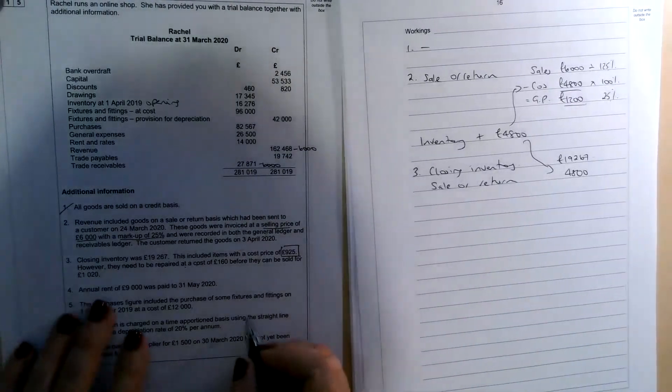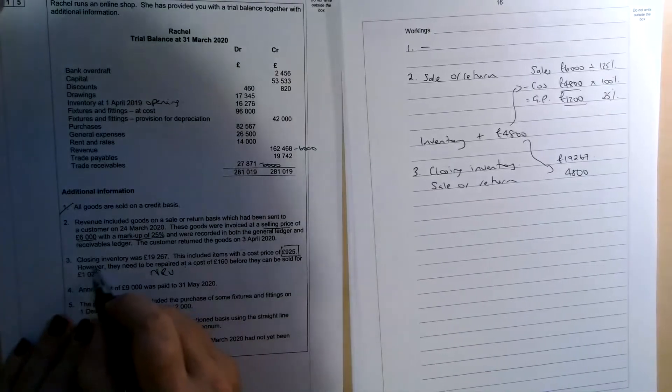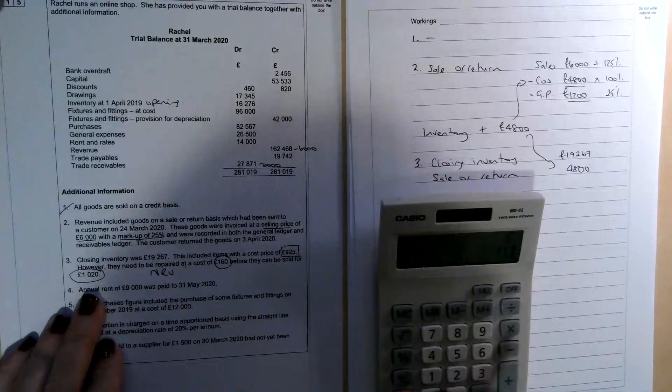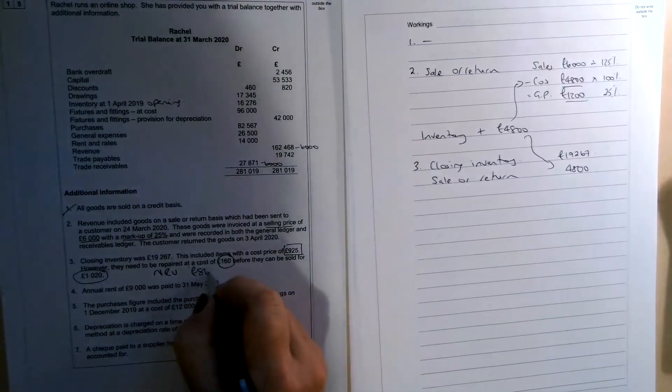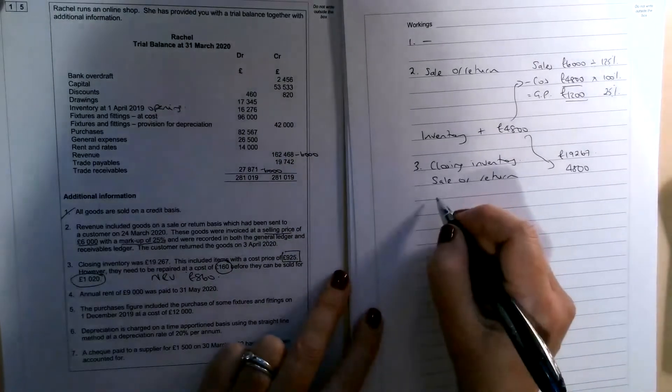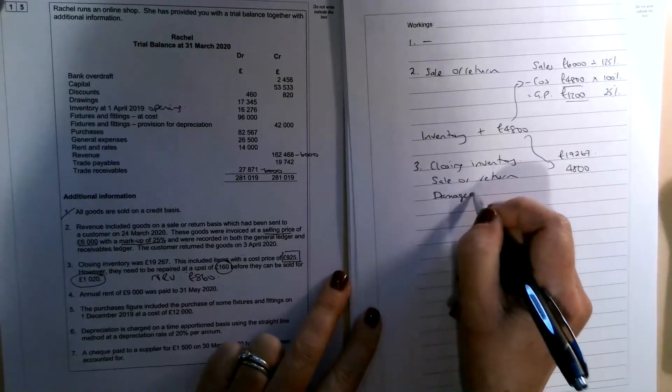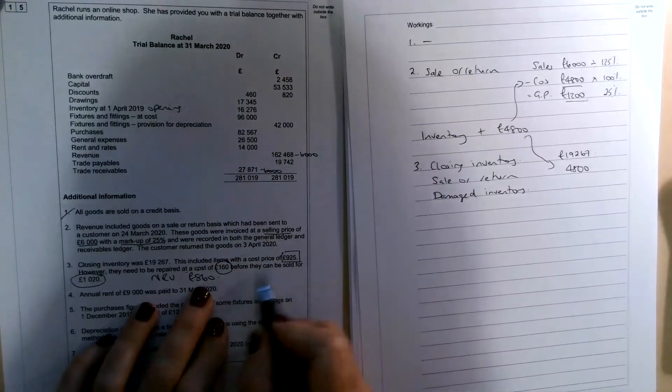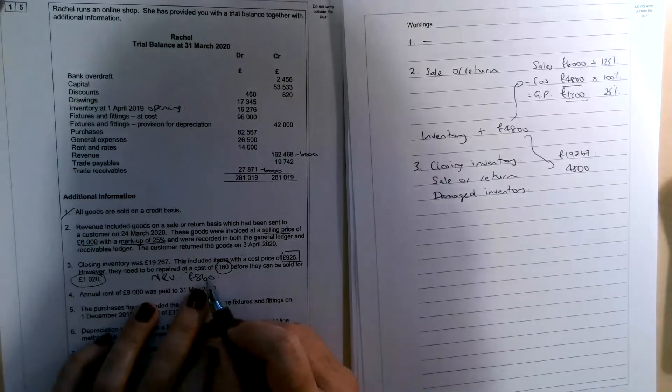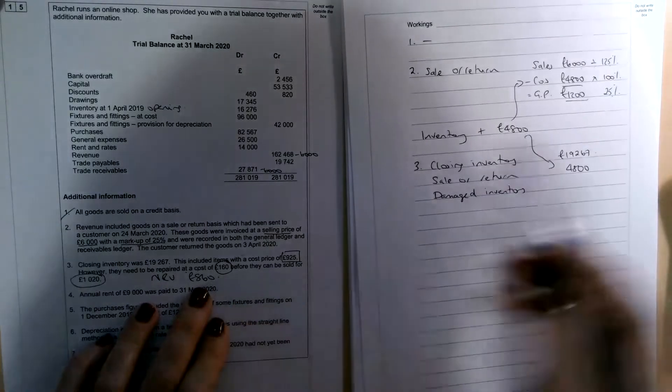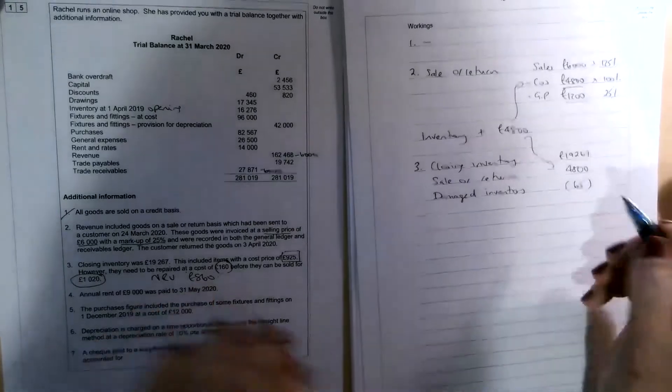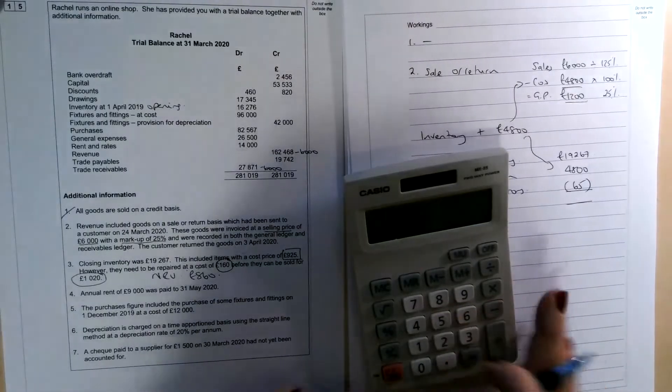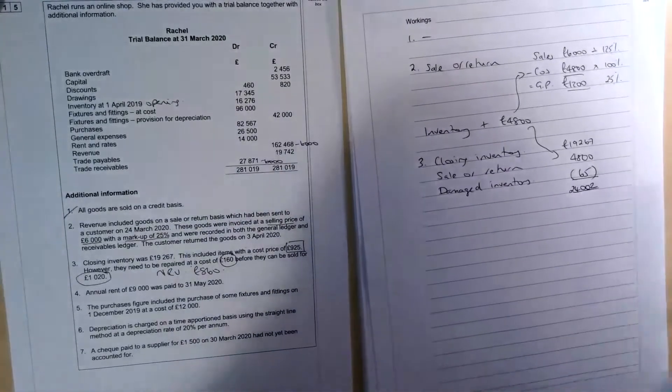So the net realisable value in this case is the £1020 that we could sell the goods for minus the £160 that we're going to have to pay to get them amended. So £1020 minus £160 means that the net realisable value is £860. So the way we deal with it is to make an adjustment. We're going to reduce the value of the inventory. We're going to take away the £925 and add the £860. Or the easier way of doing it is just to take off the difference. So cost was £925. We're now only going to be able to realise £860. So there's a further loss on that inventory of £65. So we need to record that. So that's going to reduce the value of inventory. So closing inventory now is going to be £19267 plus £4800 minus £65, which is £24002.